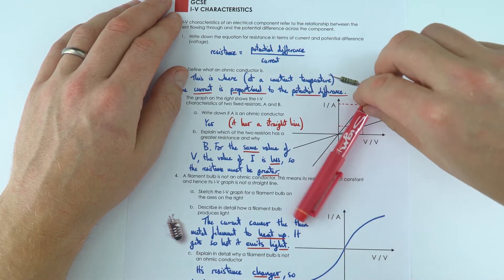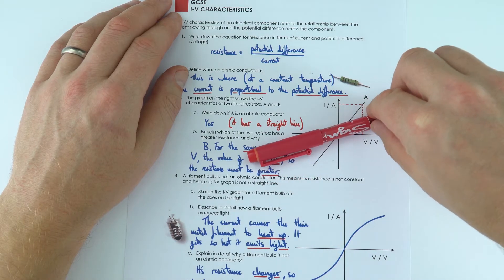So effectively with this graph here, the lower that line, the greater the resistance of that resistor.